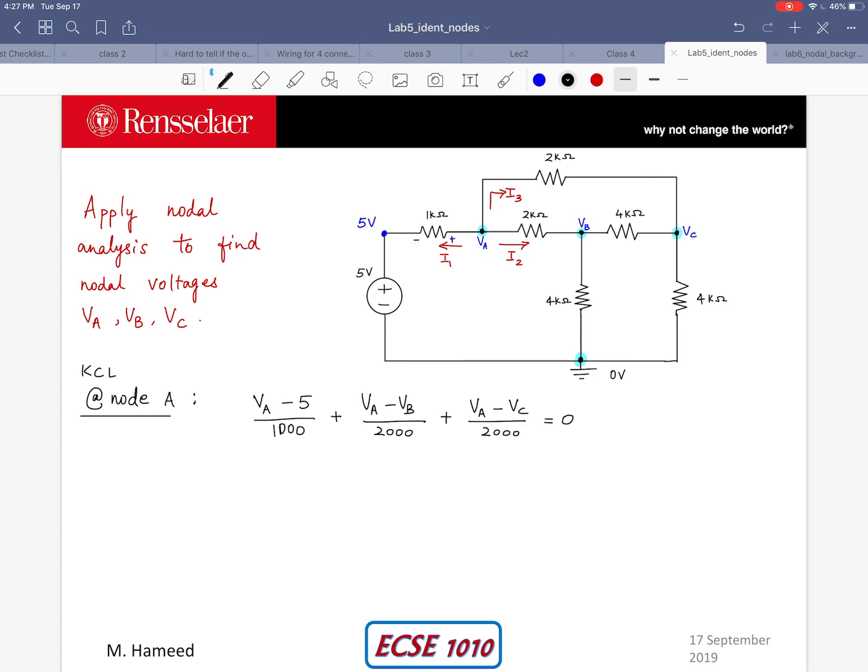I'm going to simplify this later on but I'll move on with KCL at node B. I'm assuming that all the currents are going out. I'm going to get a similar linear equation. So for VB I say VB minus VA divided by 2000, plus VB divided by 4000, plus VB minus VC divided by 4000 equals 0.